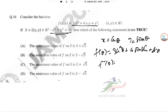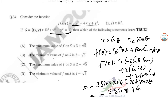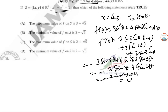Setting f'(θ) = 0: differentiating gives −2sin(2θ) + 4cos(2θ) = 0. This simplifies to 2sin(2θ) = 4cos(2θ), and therefore tan(2θ) = 2.